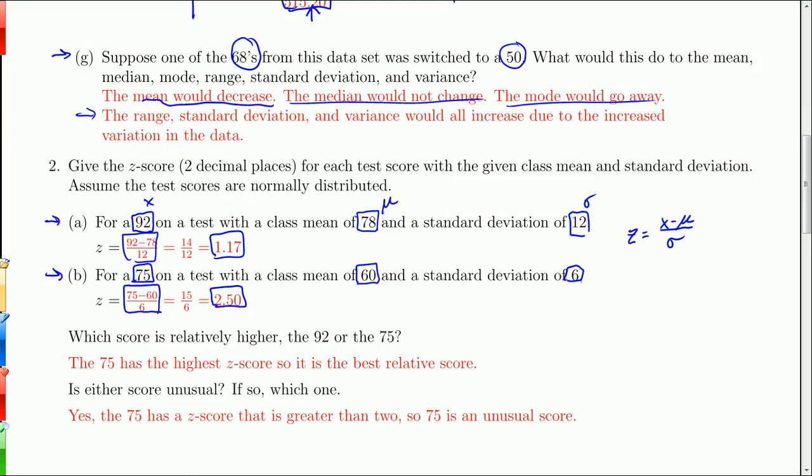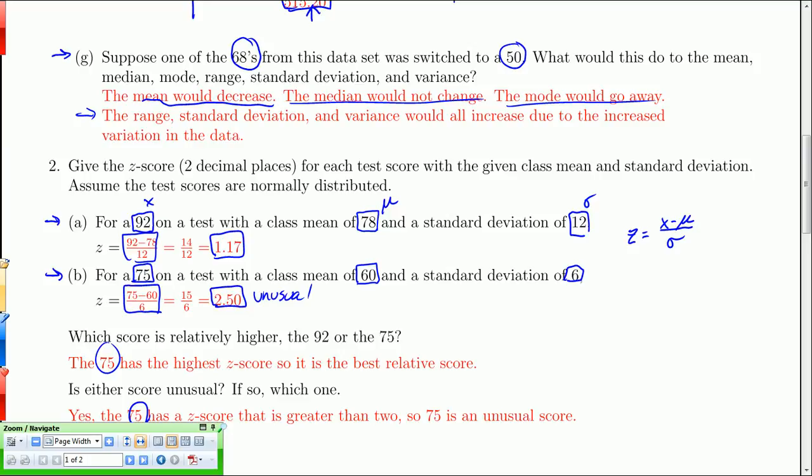When you look at a test where the value you got was, say, 75, the mean was 60, and the standard deviation was 6, the z-score right here is x minus μ over σ, which is 2.5. All right, so the 75, while being an actual lower score than the 92, with respect to the mean and standard deviation is actually a far better score. So the 75 is the relative best score. And is either score unusual? Well, if you recall, an unusual score was one that had a z-score below negative 2 or above 2. So yes, this 2.5 is above 2, so the 75 is actually an unusual score. That person did extremely well, so well that we call it unusual.